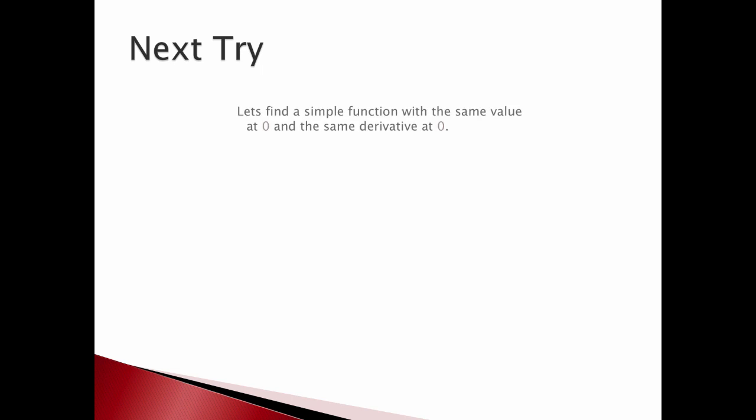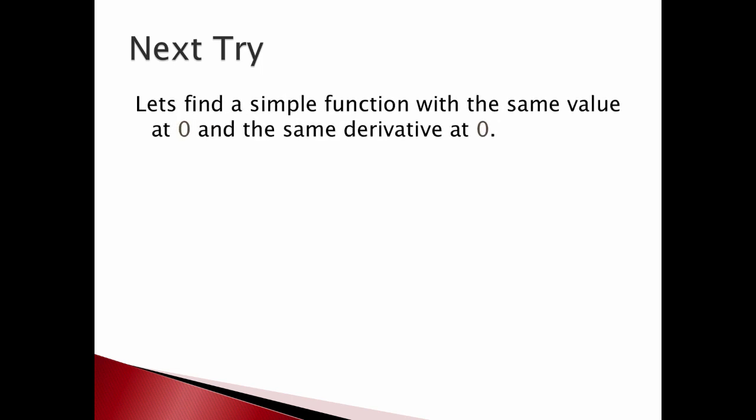Okay let's try this again. Let's find a simple function that has the same value at zero and also the same derivative. If you think about it what that really is is the tangent line. So this red line now that I've drawn is actually the tangent line at zero. So we're back to calculus one ideas.